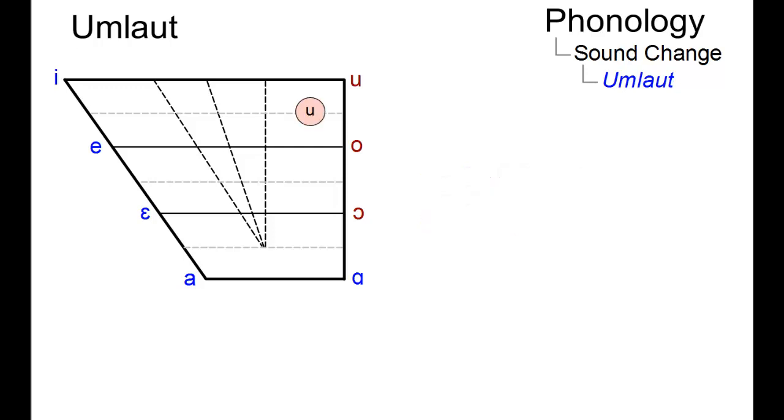For example, take the back vowel U and the front vowel I. Pronounced in succession, we get Ui. Words in which these two vowels stand next to each other are easier to pronounce if the vowels are drawn closer together, so that Ui becomes Ü.